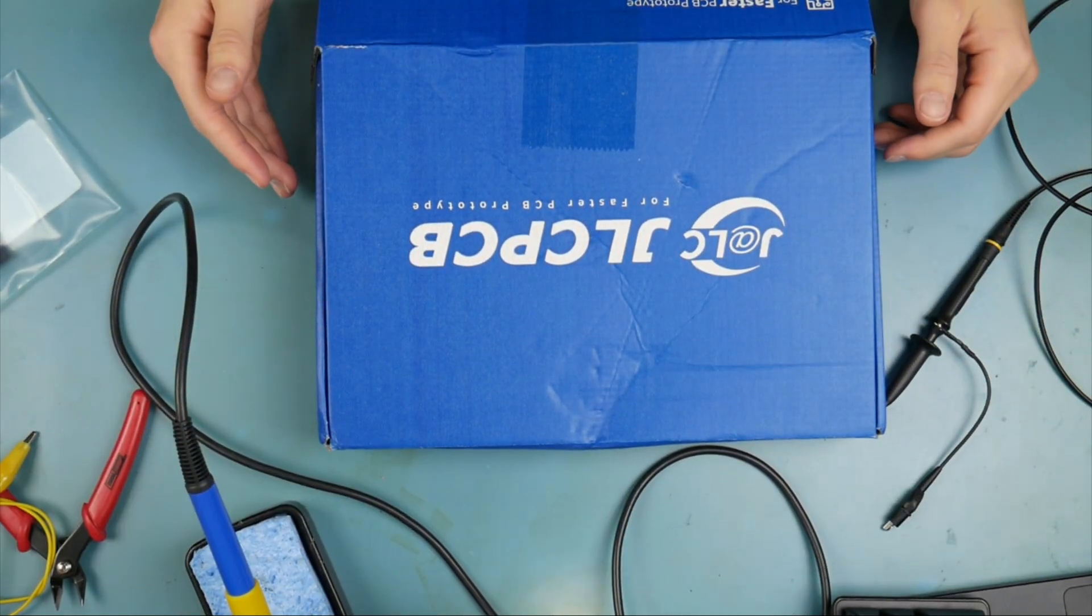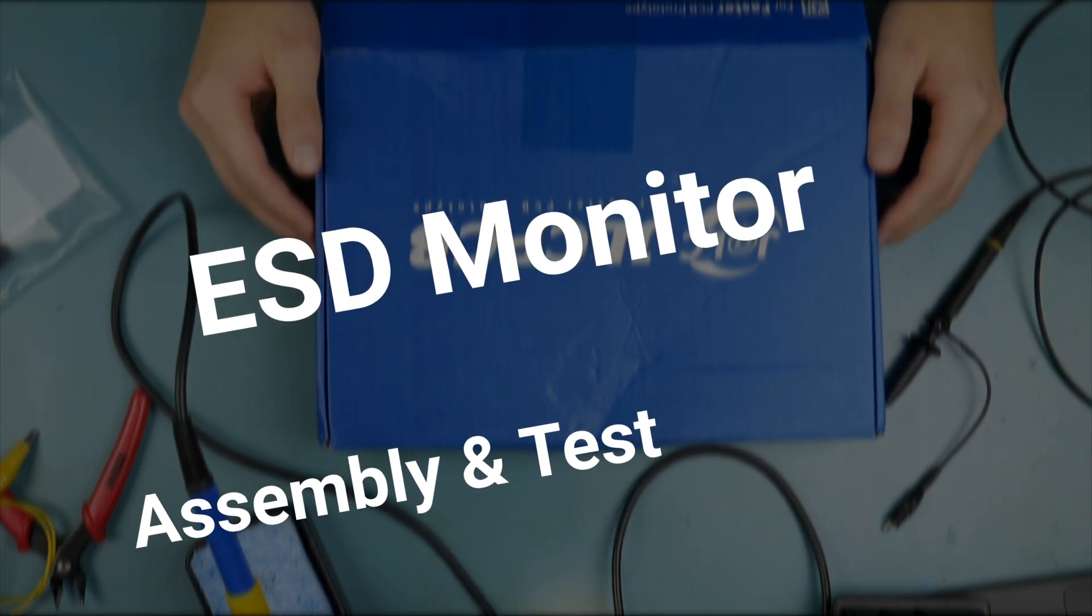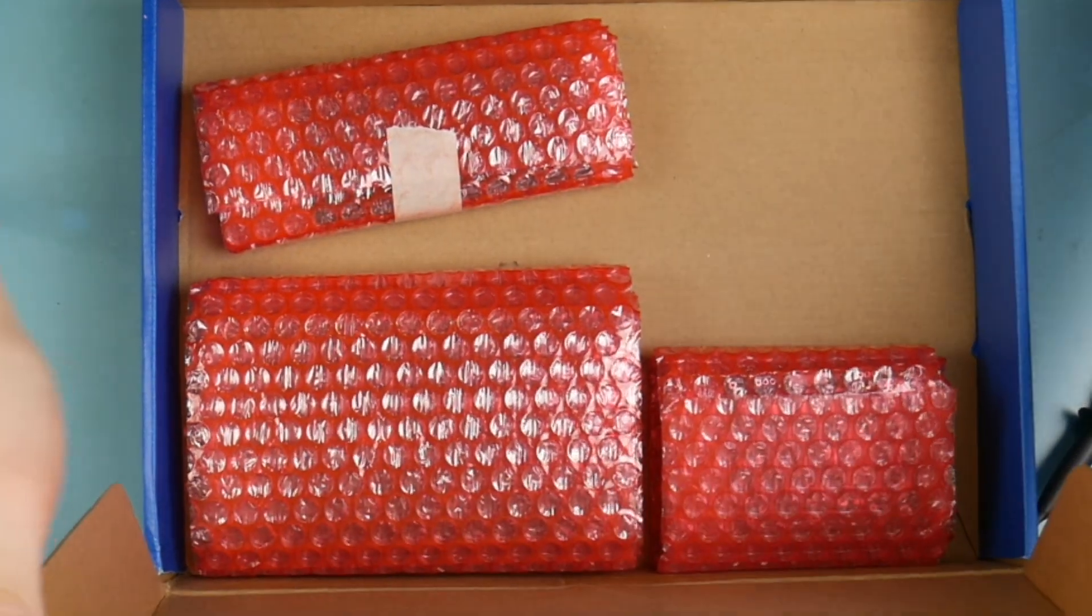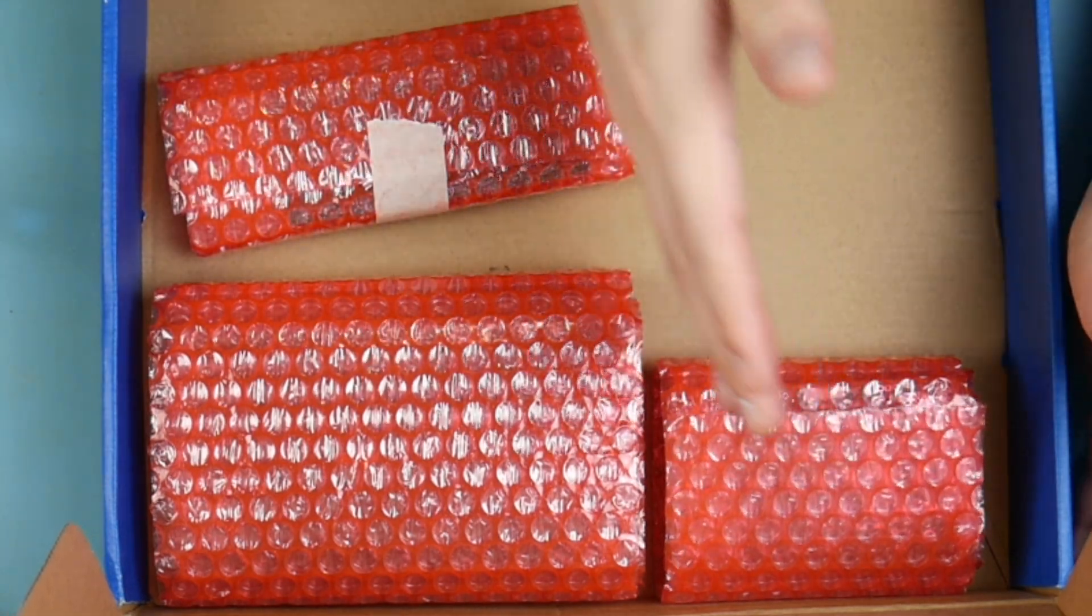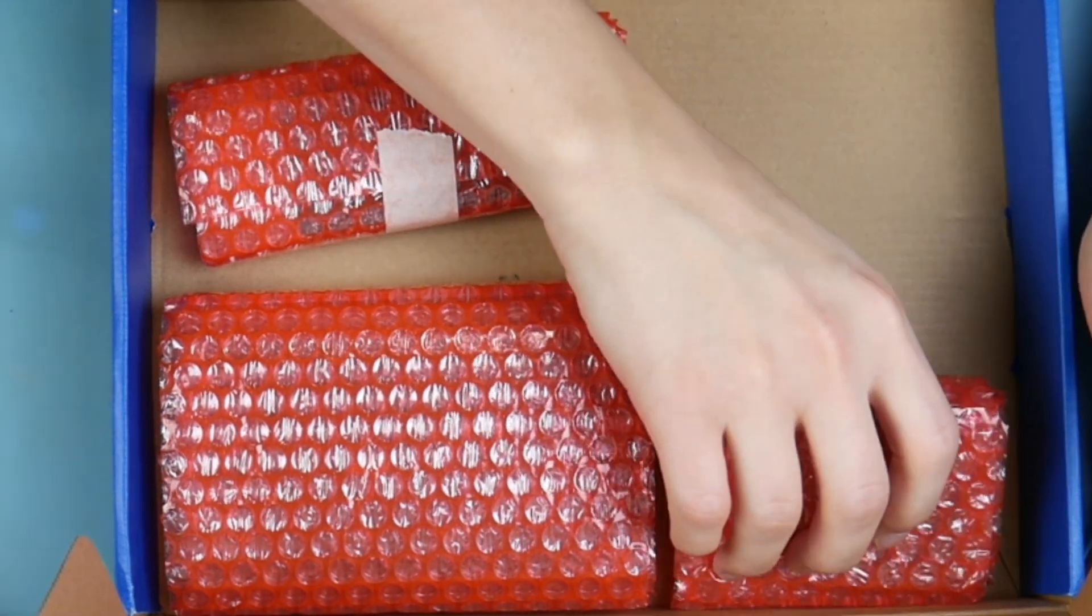We're going to continue the ESD monitor series by assembling these circuit boards for the first time. I'm just going to open this box and you might notice there are three circuit boards in here. Pay no mind to the additional circuit boards.